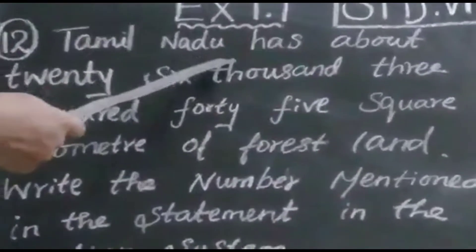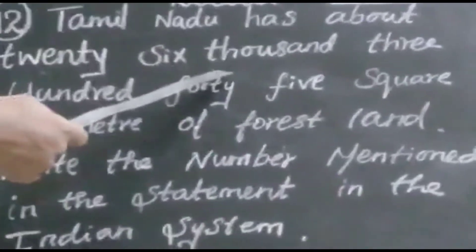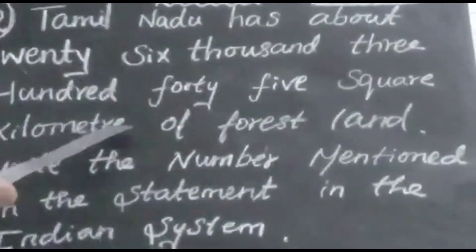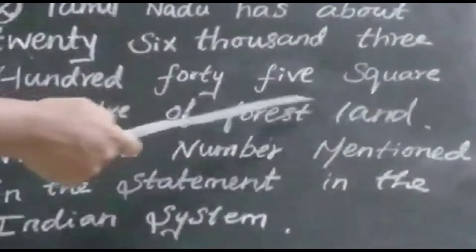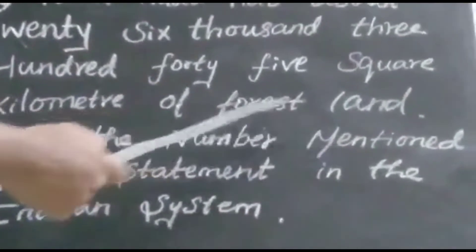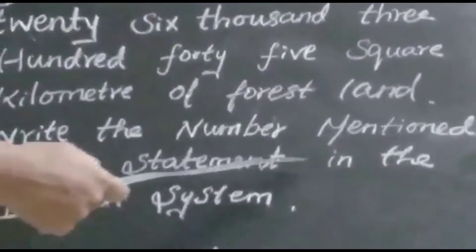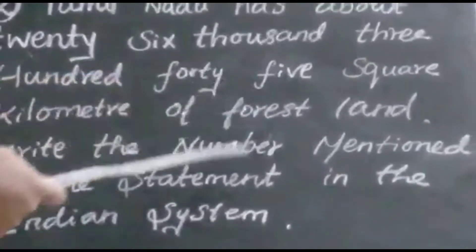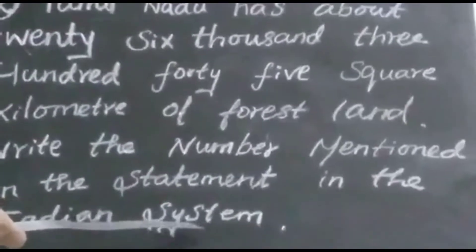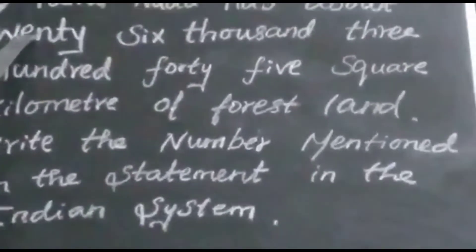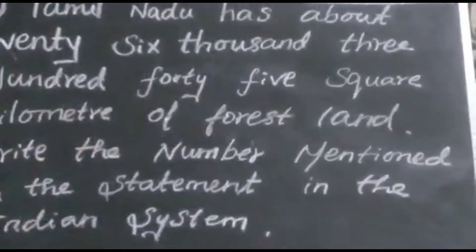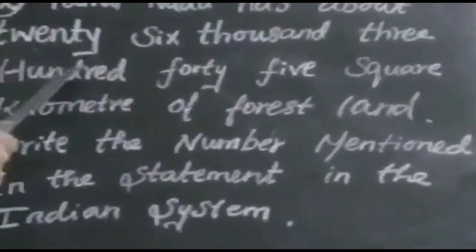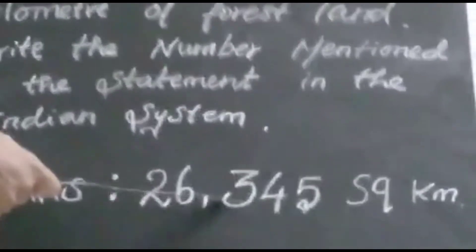12th question: Tamil Nadu has about 26,345 square kilometers of forest land. Write the number mentioned in the statement in the Indian system. Here the number name is given and you convert it to the Indian system. The number is 26,345 — write 26 in the thousands place and 345 for the remaining digits.